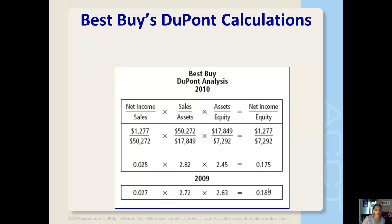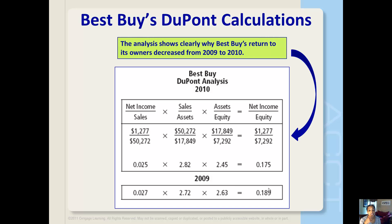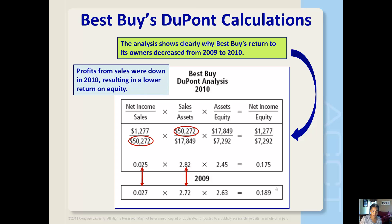Let's take a look at the DuPont analysis for Best Buy. This analysis shows why Best Buy's return to its owners decreased from 2009 to 2010. The top row is 2010 and the bottom is 2009. The profitability ratio has gone down, total asset turnover has gone up, but the assets to equity ratio has gone down. Because the profits from sales were down, that resulted in a lower return on equity. The change in the capital structure is also lowering the return on equity.